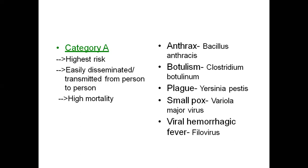Bioterrorism agents are divided into categories. Category A represents the highest risk agents — easily disseminated, transmitted from person to person, communicable, and with high mortality. Species include anthrax (Bacillus anthracis), botulism (Clostridium), plague (Yersinia), smallpox (variola major virus), and viral hemorrhagic fever (filovirus, transmitted by mosquitoes).